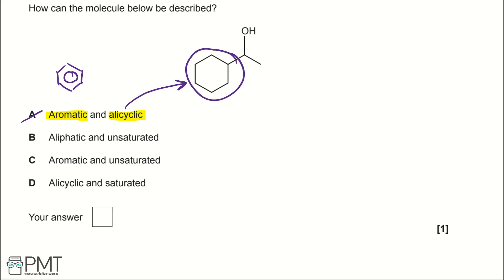In part B, we're told it's aliphatic and unsaturated. An aliphatic compound is a hydrocarbon chain, which this is. But if something's unsaturated, that means it's got a carbon-carbon double bond, which this molecule doesn't have, so it can't be B.